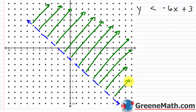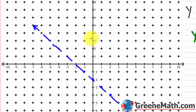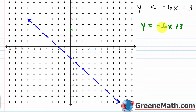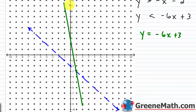For the second inequality, y is less than negative 6x plus 3, we again have a broken or dashed boundary line. The y-intercept occurs at (0, 3), and the slope is negative 6 — fall 6, go right 1. I graph and break up that line, then shade below it since y is less than.